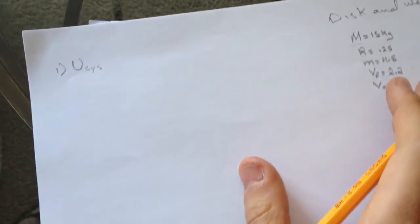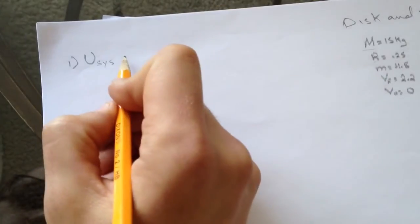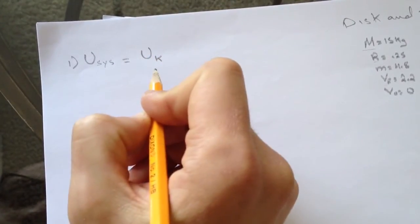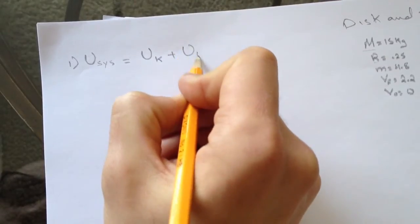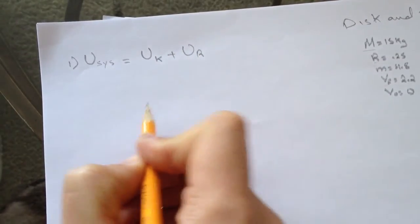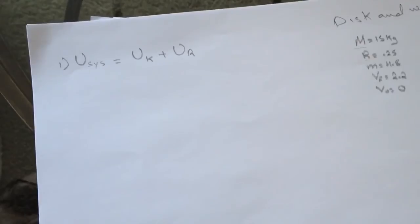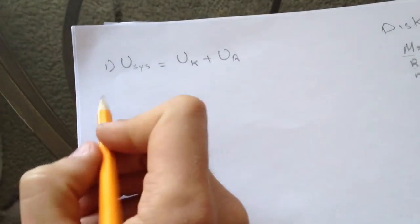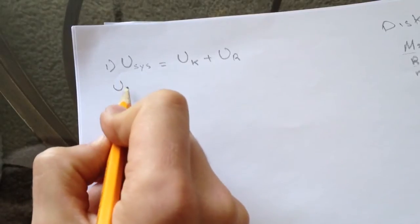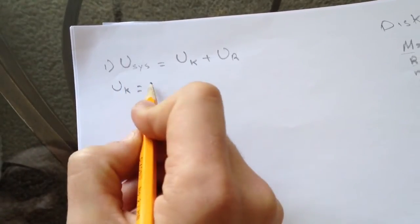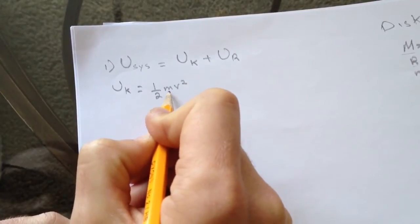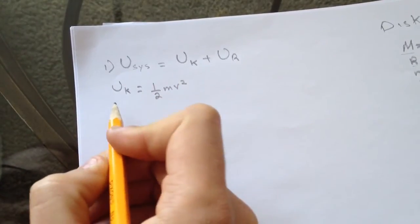The energy of the system will have kinetic energy plus rotational energy. The kinetic energy equals half mv squared, and this m is just for the mass of the weight.